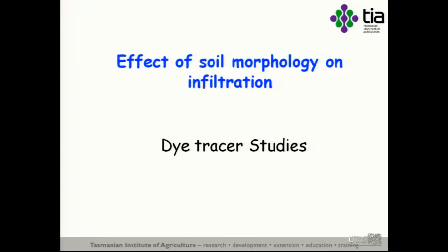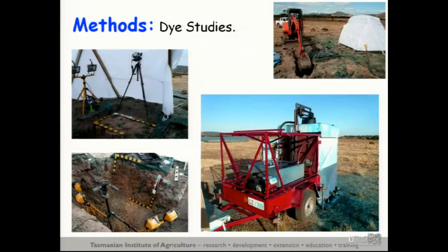One of the principal methods I used was dye tracer. This is the rainfall simulator applying 25 millimetres of dye tracer to the soil. I then excavated a trench beside the dye area, built a shade tent over the whole area, and then excavated in a series of horizontal sequences down through the profile and vertically through the profile.